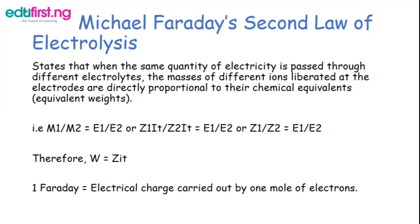This can be expressed mathematically as m₁/m₂ = E₁/E₂. Since m = zIt, we get z₁It / z₂It = E₁/E₂, and cancelling It gives z₁/z₂ = E₁/E₂. Therefore equivalent weight equals zIt. Also, one Faraday is equivalent to the electrical charge carried by one mole of electrons.